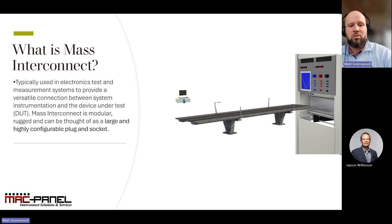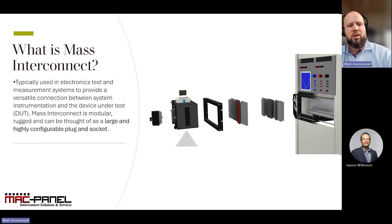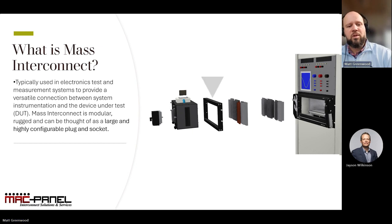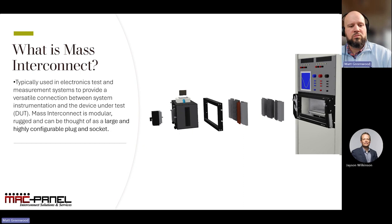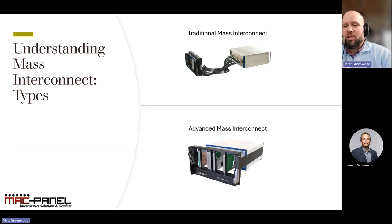This is what a traditional mass interconnect system would traditionally look like. You have the interchangeable test adapter here, a device under test, the ITA frame, ITA modules and receiver modules, along with a receiver and the test station. Broadly speaking, we can categorize mass interconnect into two main types: traditional mass interconnect and advanced mass interconnect.